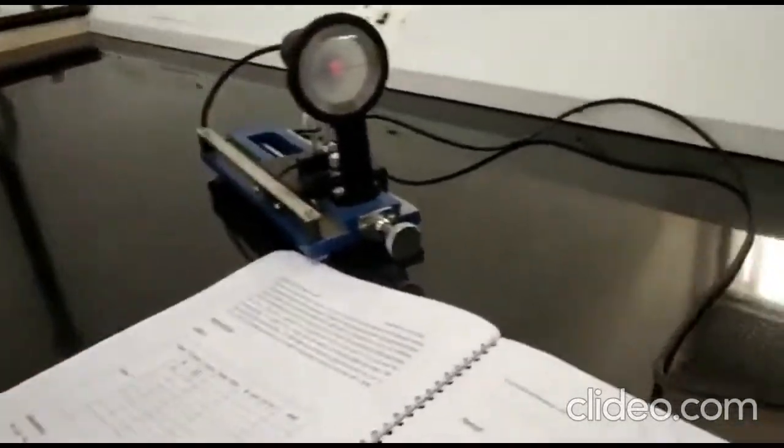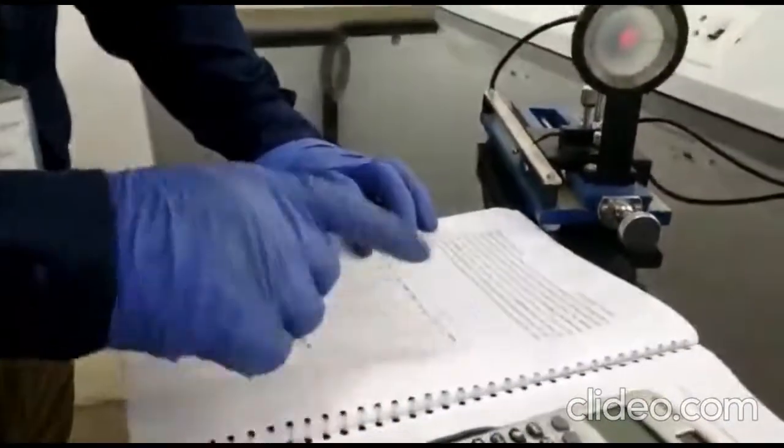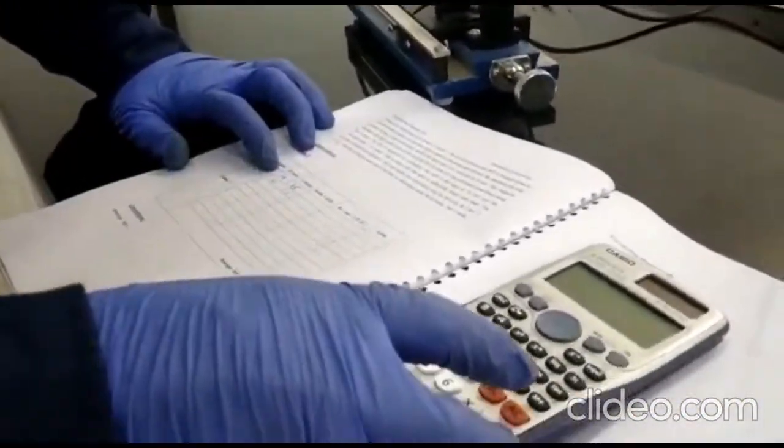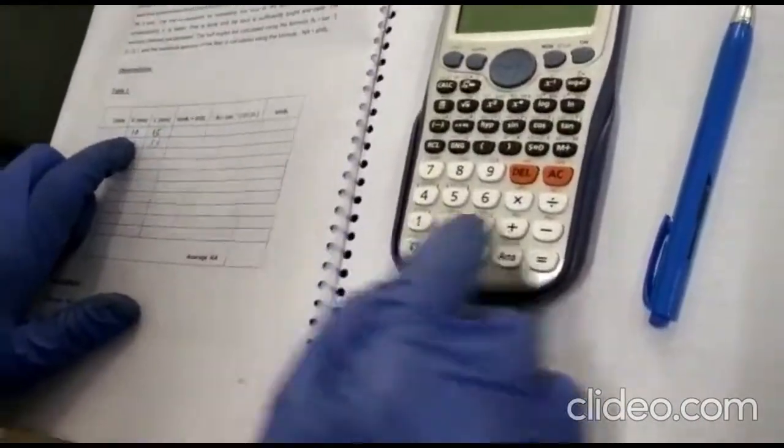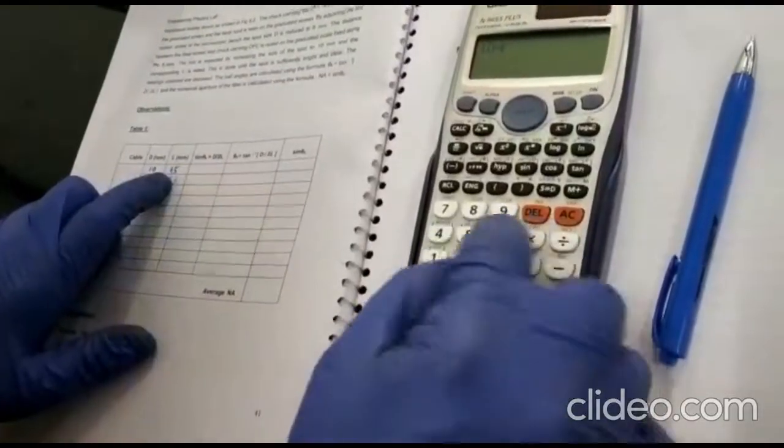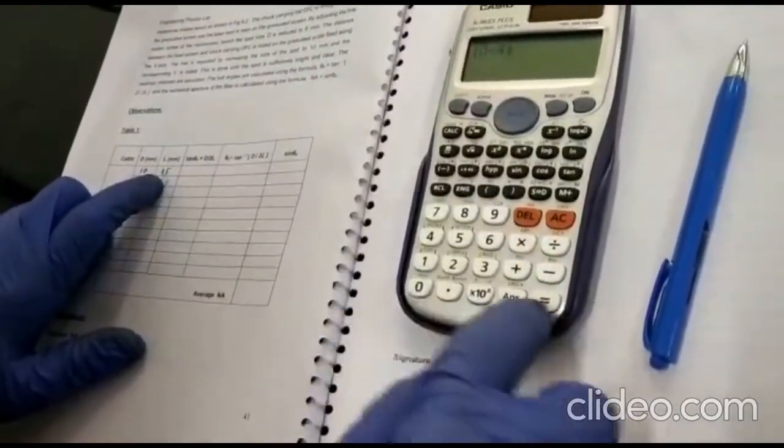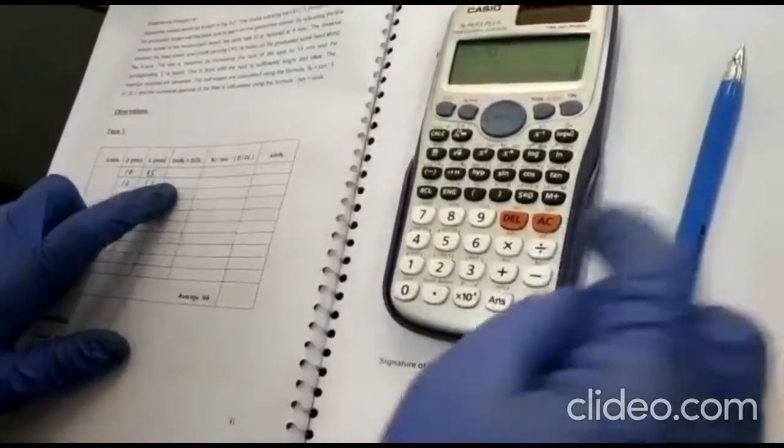So here now you need to take a calculator. In the calculator, you see tan theta is d by 2L. So diameter is 10 divided by 2 times L. That is 2 times 45 is 90. That is the value that you get for tan theta, 1 by 9.